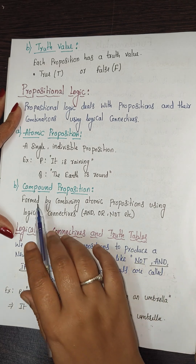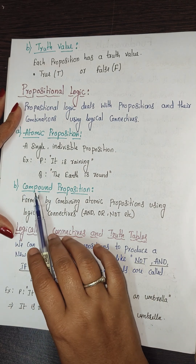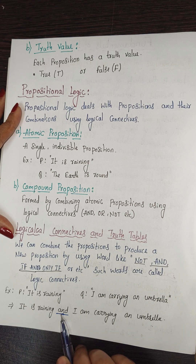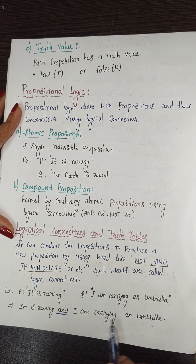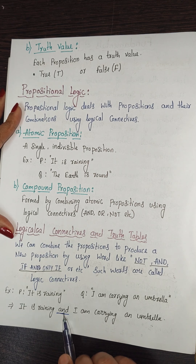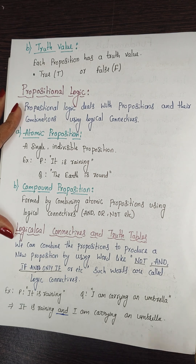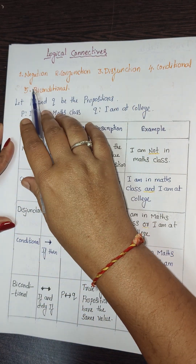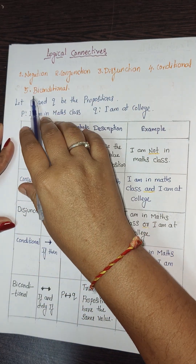So 'it is raining and I am carrying an umbrella' is an example of a compound proposition, using 'and' as the connective. There are five logical connectives: negation, conjunction, disjunction, conditional, and bi-conditional.